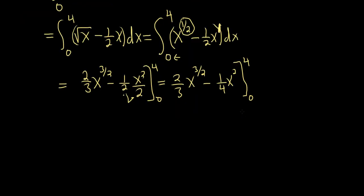So we plug in the 4 first, subtract, and then plug in the 0. So let's go ahead and grind it all out. So this is 2 thirds, 4 to the 3 halves minus 1 fourth, 4 squared minus. And then when you plug in 0 to these guys, it all goes away. So we get a big 0. That's great.